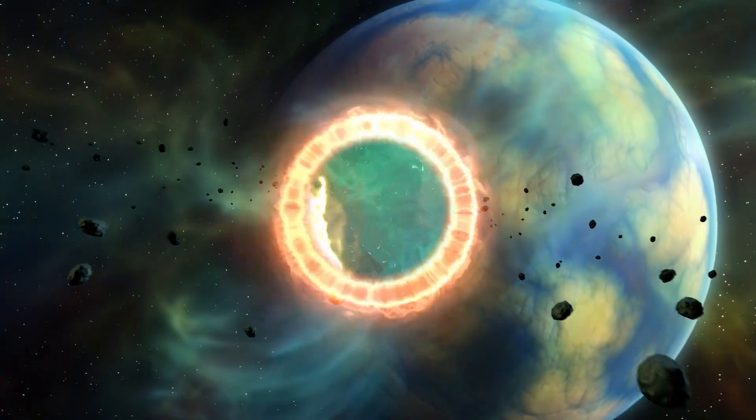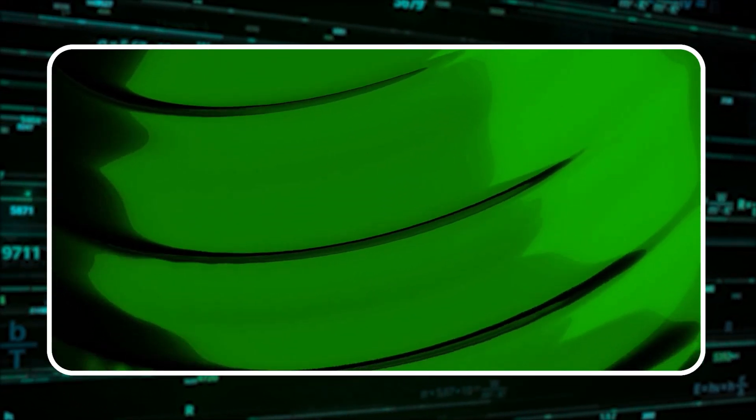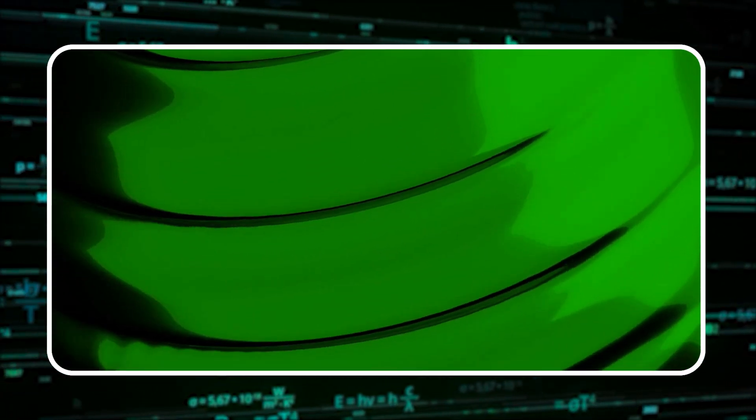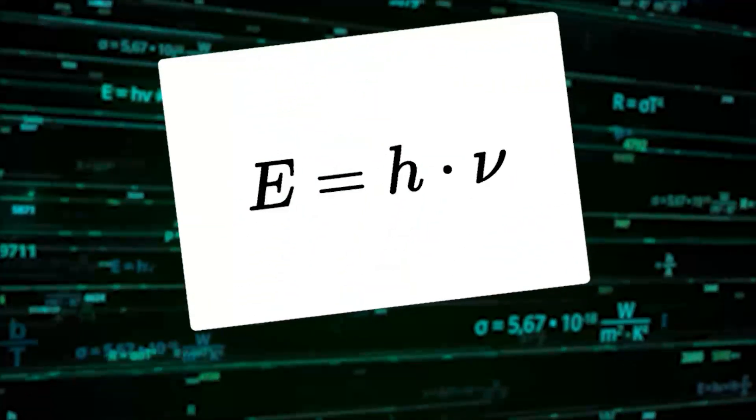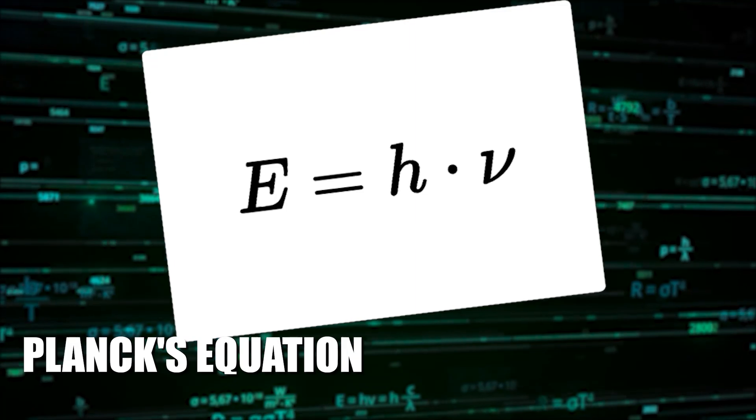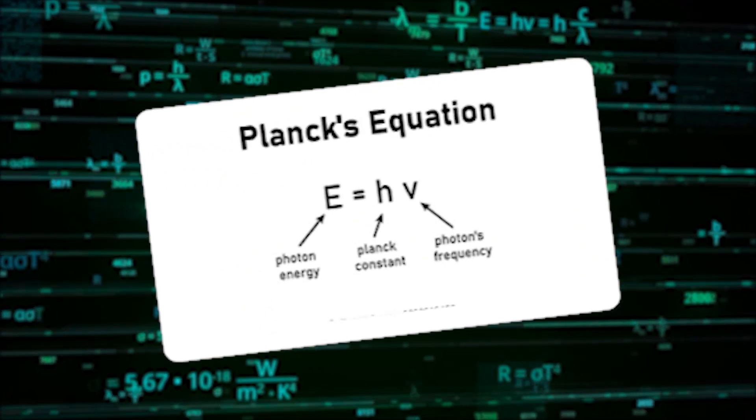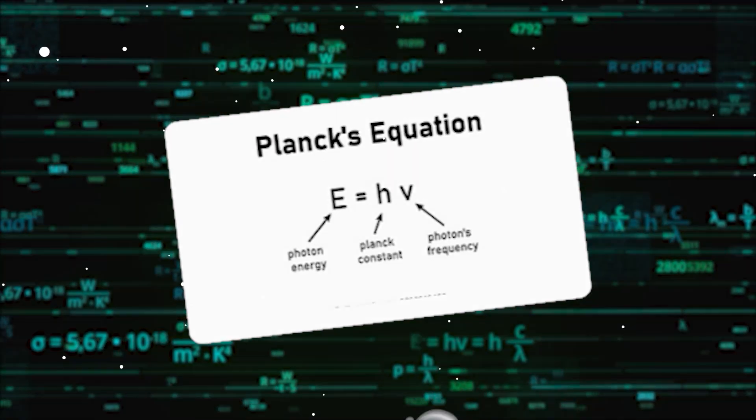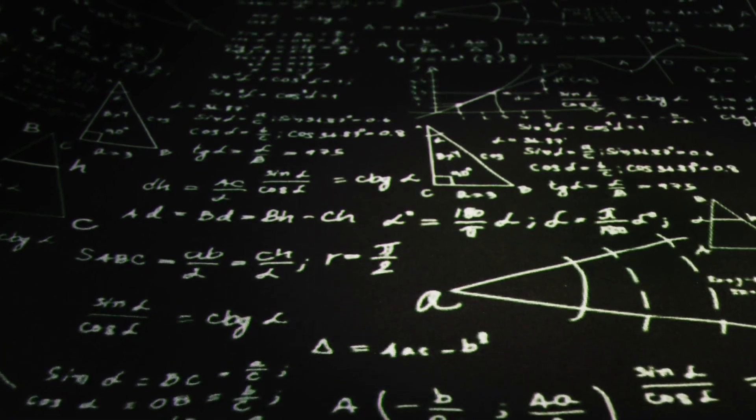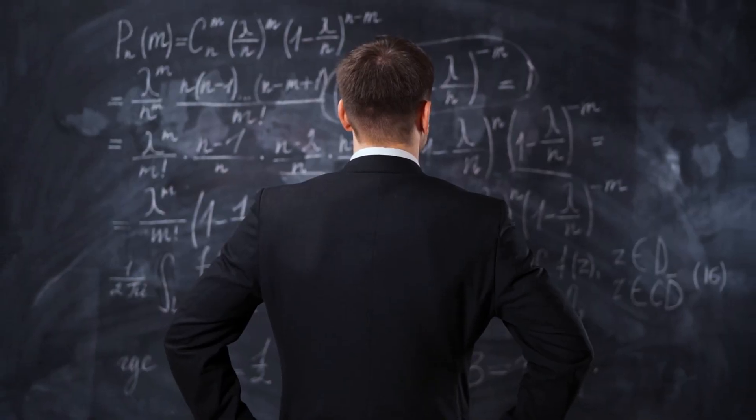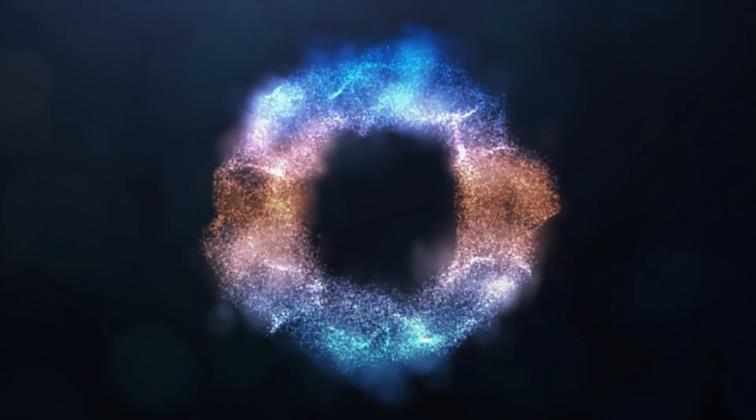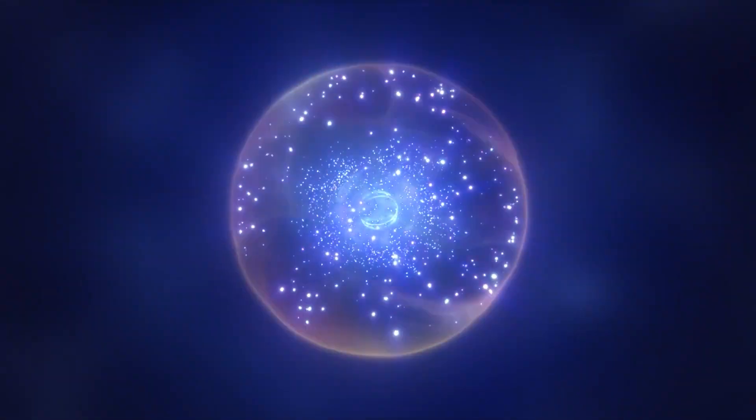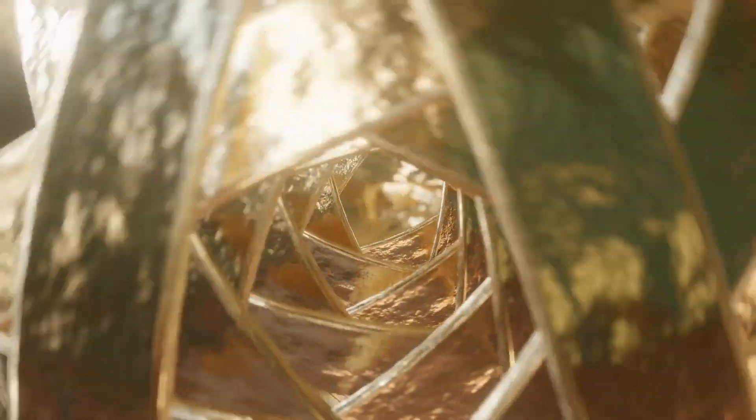The energy of a photon is directly proportional to the electromagnetic wave's frequency with which it is associated. This relationship is described by Planck's equation, where the energy is equal to Planck's constant times the frequency. This characteristic is crucial for understanding phenomena like the photoelectric effect, where photons can transfer their energy to electrons, causing them to be ejected from a material.